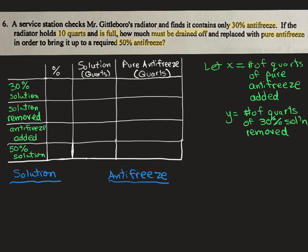So in the question where they say how much must be drained off, we're going to let that equal y. So we want to write our let statement: let y equal number of quarts of 30% solution removed. And we're going to let x equal the number of quarts of pure antifreeze added, which is also something they're asking us to find.